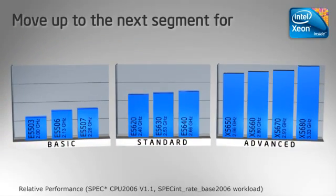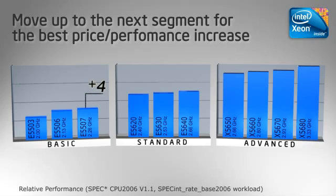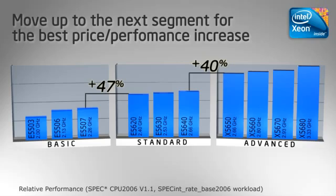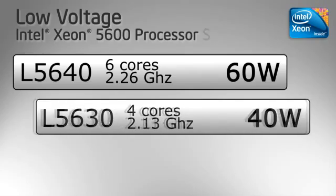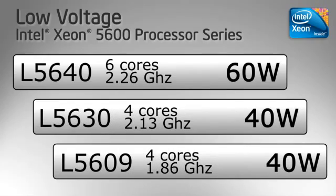Across these market segments, you can maximize your cost savings through lower power, cooling, and software licensing costs by replacing multiple older servers with fewer, better performing, and more efficient systems based on the Intel Xeon processor 5600 series. If reducing power consumption is the top priority, there are low voltage options within each of the Intel Xeon processor 5600 series segments, which consume up to 50% less power at full utilization.